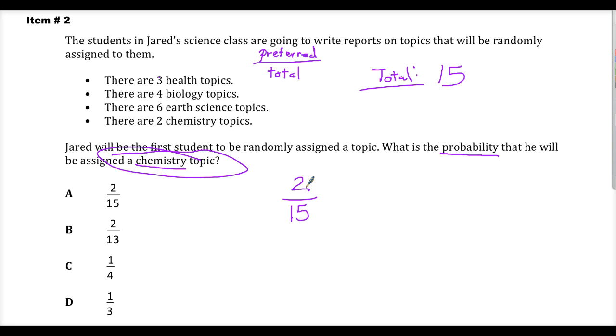And then find the preferred, put that in the numerator, total in the denominator, reduce it if you're asked to do it. If you need a percent, divide, multiply by a hundred. And that's it. It's not really that difficult to do, but if you could just remember probability, total, and then preferred on top. That's it.